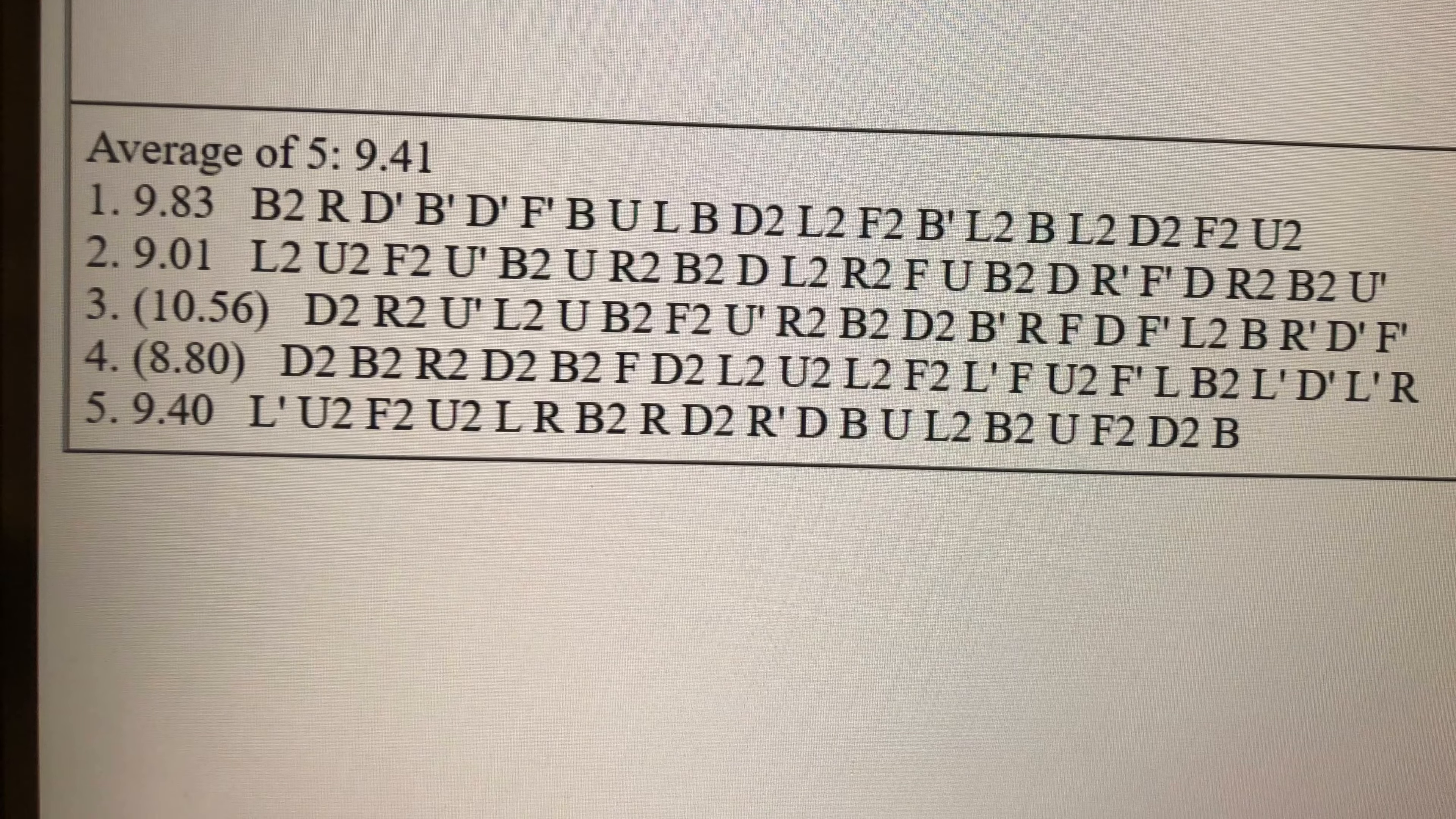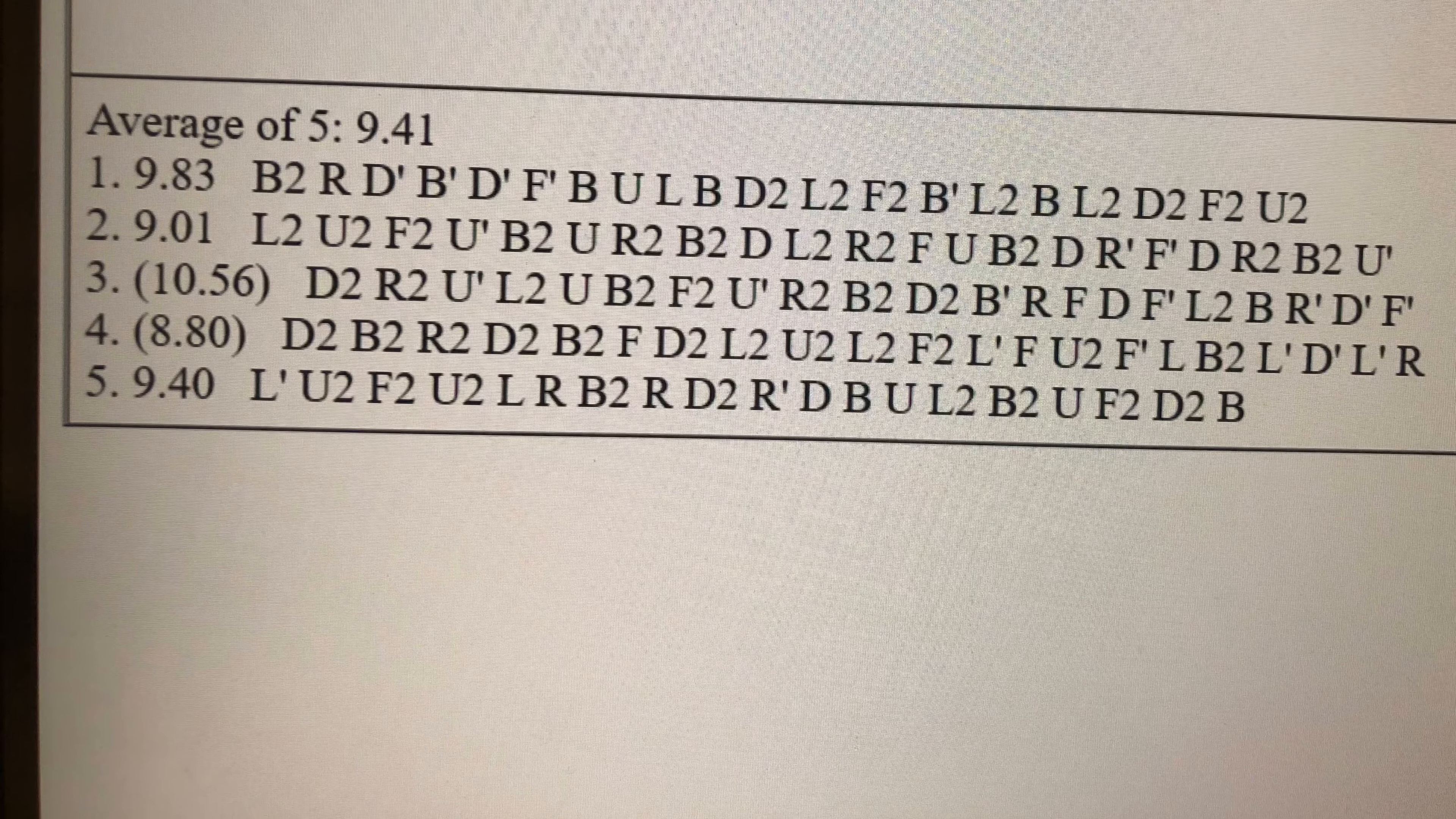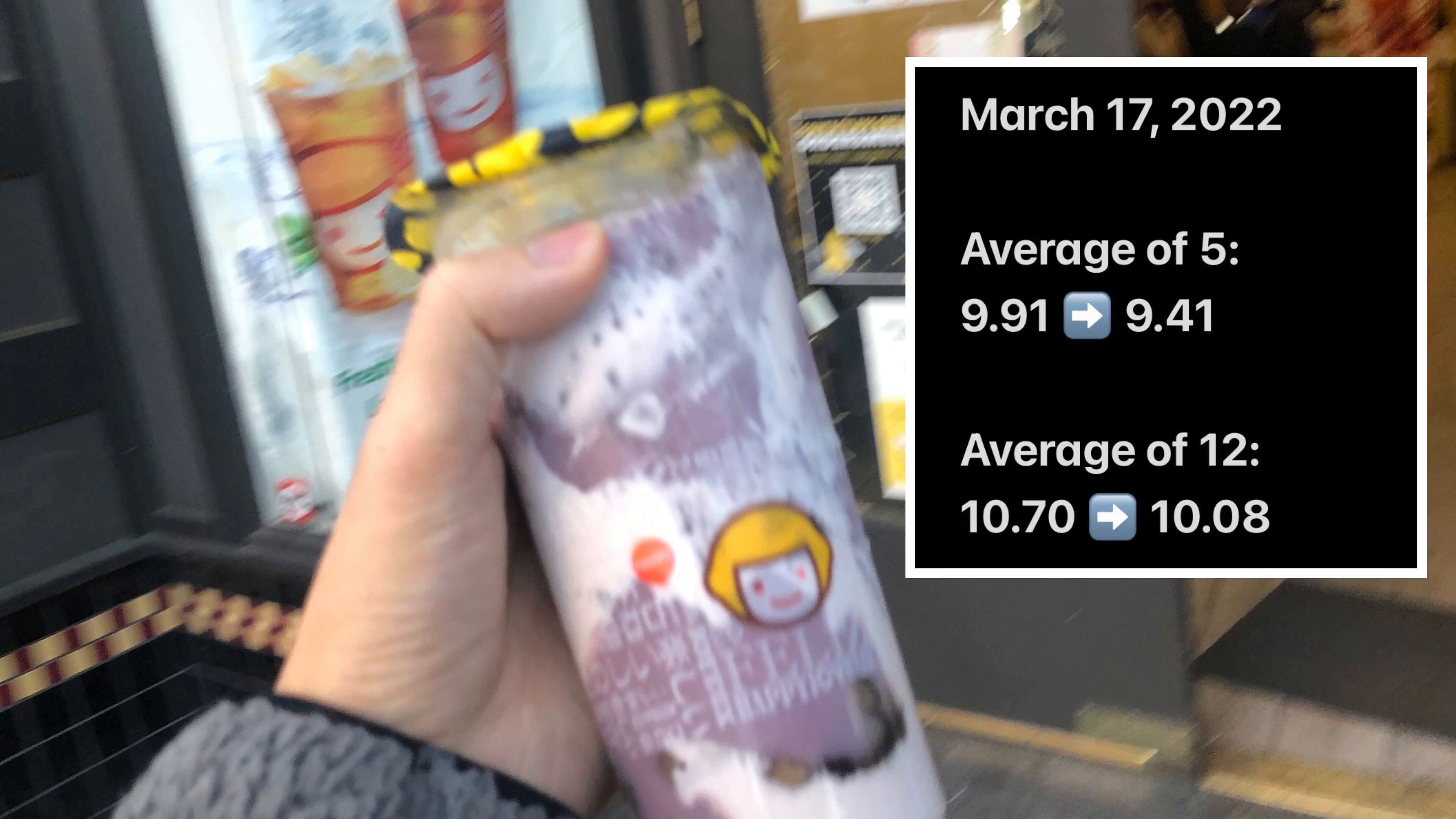Also, I think the 8.80 solve was the only one that had a skip, which was a PLL skip. Okay, now ignore the boba.